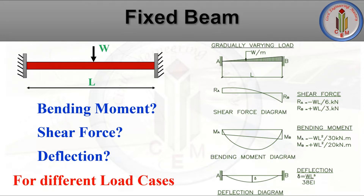For fixed beams, we always get confused with support conditions — whether it is simply supported or fixed support — and what load cases apply. To avoid that confusion, if we make a clear diagram of how the shear force diagram looks for a fixed beam, and how to draw the bending moment diagram with different load cases, we will have a clear picture of the internal forces developed in the structural elements.